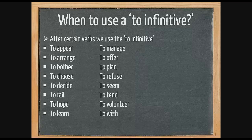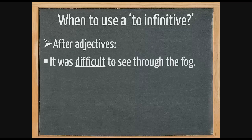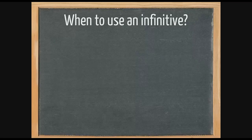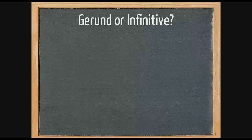Certain verbs take the to-infinitive, including: appear, arrange, bother, choose, decide, feel, hope, learn, manage, offer, plan, refuse, seem, tend, volunteer, and wish. For example, 'I appear to have lost my keys.' We also use the to-infinitive after adjectives: 'It was difficult to see through the fog'; 'She's happy to help us.' After modals — can, could, will, would, shall, may, might, must, should — we use the bare infinitive: 'I might wonder where my keys are.'